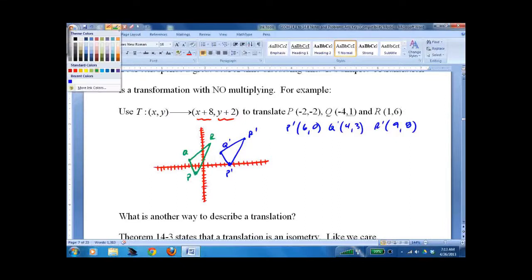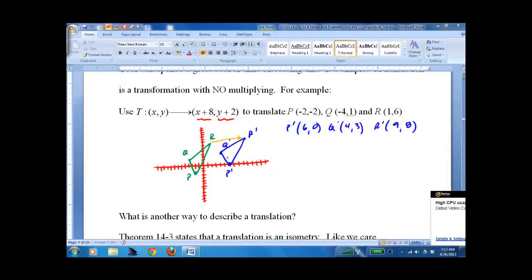So we get this interesting little situation where the green one translates, not transforms. Well, it also transforms, but translates is the best way to put it, directly to blue. So what's another way to describe translation? Clearly it's a vector.